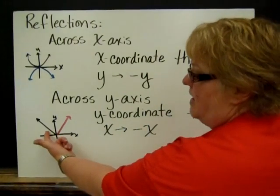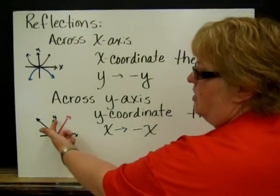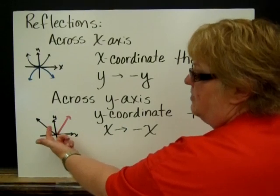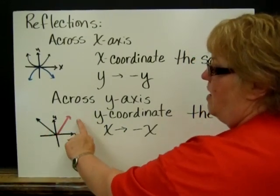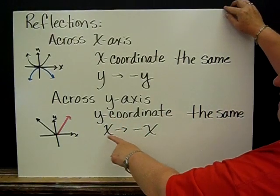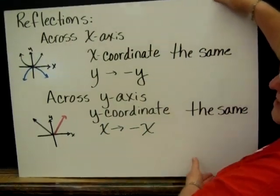When you flip across the y-axis, notice that all the y-values are the same, but the x's change sign. So if you're flipping across y, then the y-coordinate is the same and the x-coordinate becomes the opposite.